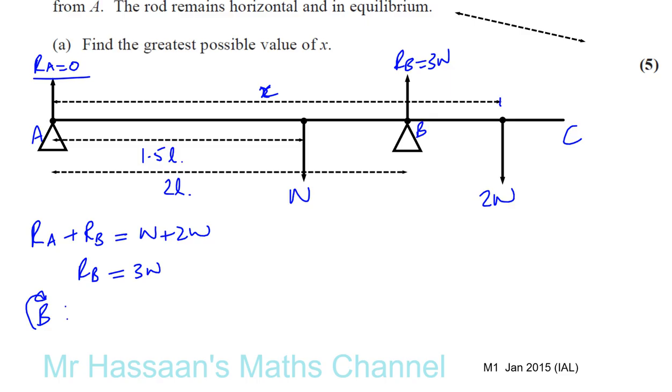Now, if I take moments about B, then this distance is X minus 2L, from there to there. This distance is L. Sorry, not this distance. What am I doing? Not that distance. That's X minus 2L. Sorry, this distance here. If that's 2L, that's going to be 0.5L, isn't it? Because that's 1.5, that's 2. So, that distance is 0.5L. That distance is X minus 2L. Those are only two forces that we're going to deal with because we're taking moments about B.